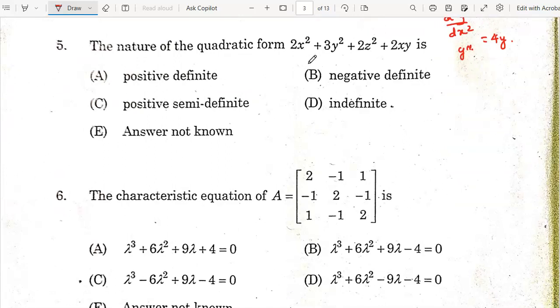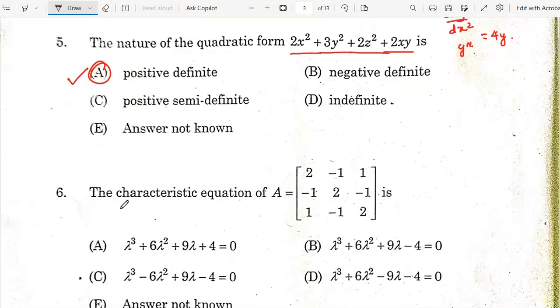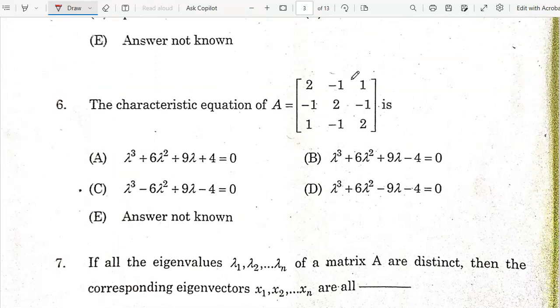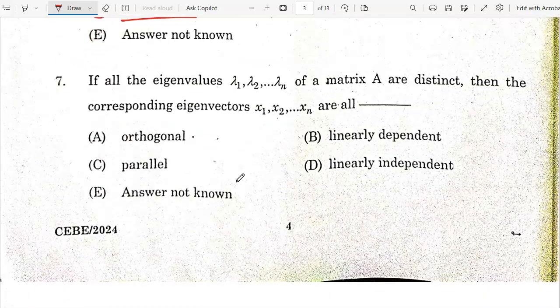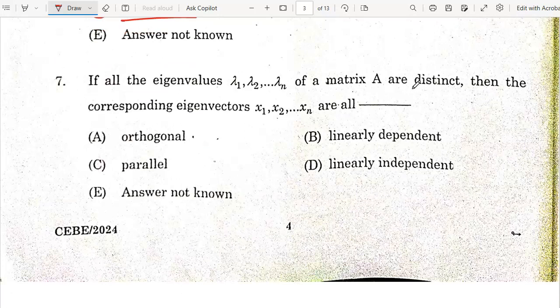Next question: The nature of the quadratic form 2x squared plus 3y squared plus 2z squared plus 2xy is positive definite. The characteristic equation: if all the eigenvalues lambda 1, lambda 2, lambda n of a matrix A are distinct, then the corresponding eigenvectors x1, x2, xn are all linearly independent. So option D is the correct answer.